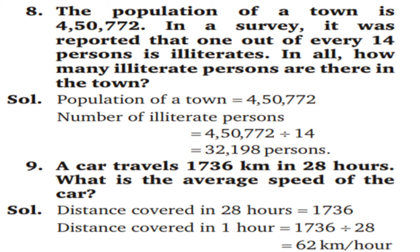8th question: the population of a town is 4,50,772. In a survey, it was reported that 1 out of every 14 persons is illiterate. How many illiterate persons are there in the town? Number of illiterate persons = 4,50,772 ÷ 14 = 32,198.